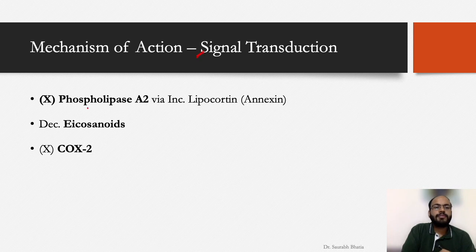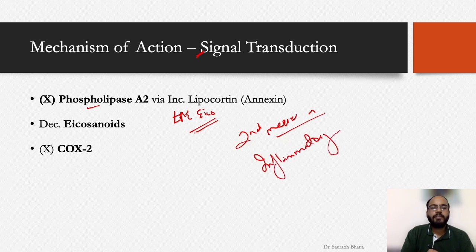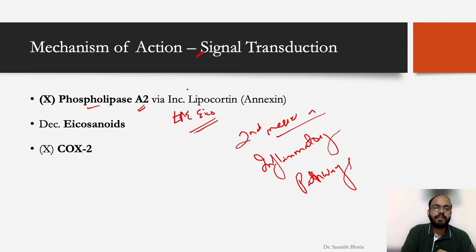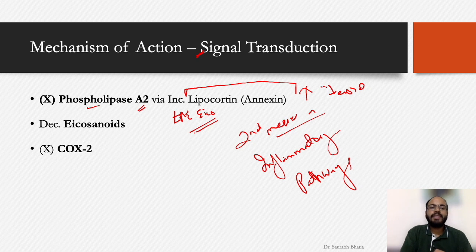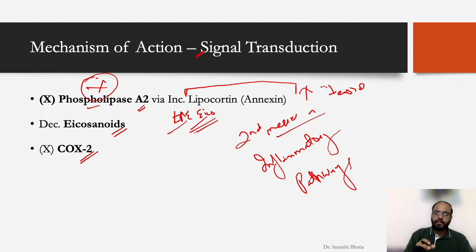Regarding signal transduction: phospholipase A2 is responsible for secretion of leukotrienes and eicosanoids, which are secondary messengers in multiple inflammatory pathways. Steroids increase lipocortin (also known as annexin), which inhibits phospholipase A2, leading to decreased leukotrienes and eicosanoids. Steroids also decrease COX-2 enzyme activity, further improving inflammatory pathways and pain control.